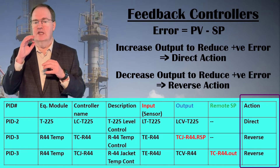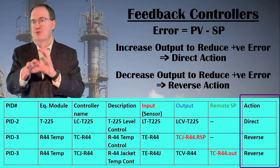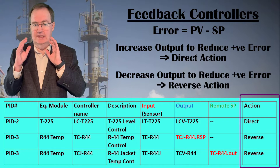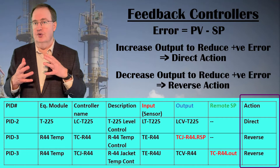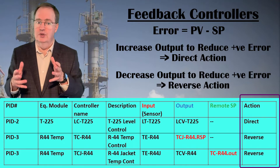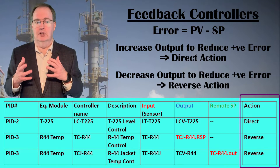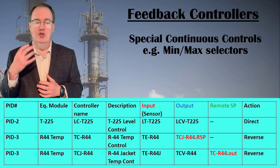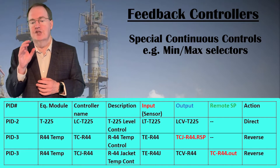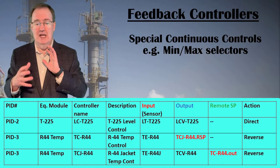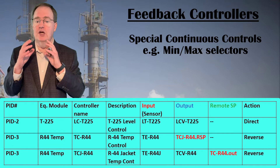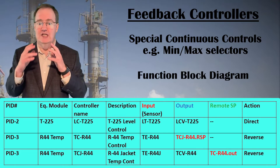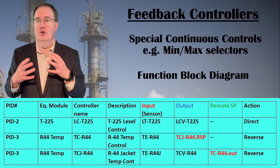This can be confusing because if the input and output of the controller move in the same direction, that's reverse acting, and if they move in opposite directions, that's direct action. Simple flow controllers and heaters are reverse acting. Level control using a tank outlet flow and coolers are direct acting. Think carefully when completing this specification — it's easy to get it wrong. If you have special continuous controls like minimum or maximum selectors for a constraint controller or calculations to be carried out continuously, describe them clearly using a table, a drawing, or text. If it is something unusual, try writing out a function block diagram, as that's how most continuous controls will be implemented on the control system.